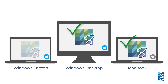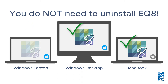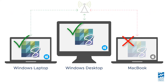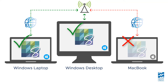Since EQ8 is currently active on two computers, you must first deactivate EQ8 on one of those computers to free up an activation for your Windows laptop. You do not need to uninstall EQ8 — you're simply deactivating the license. Since activation and deactivation both send a signal to EQ's activation server over the internet, you must be sure you're connected to the internet first.